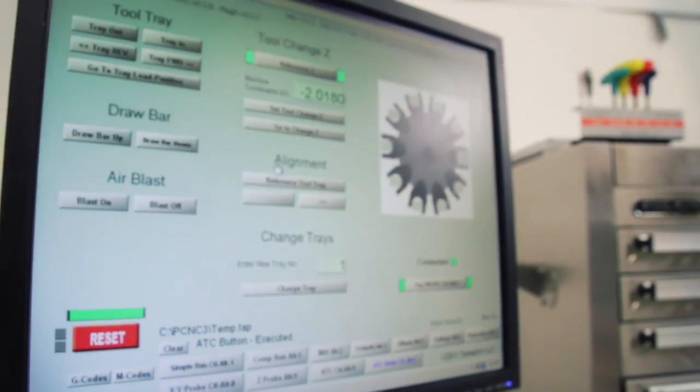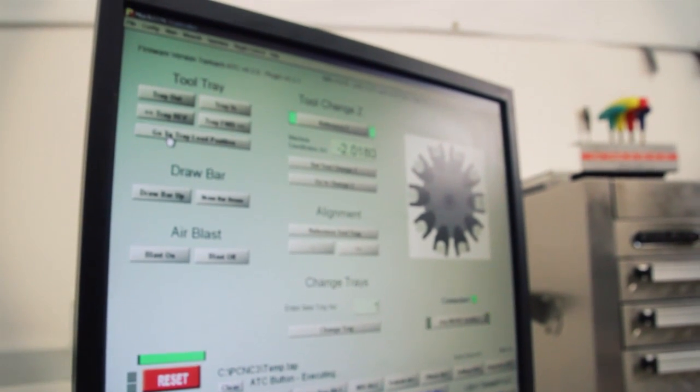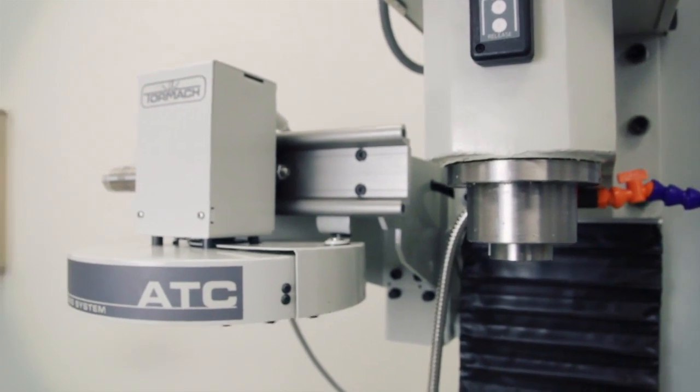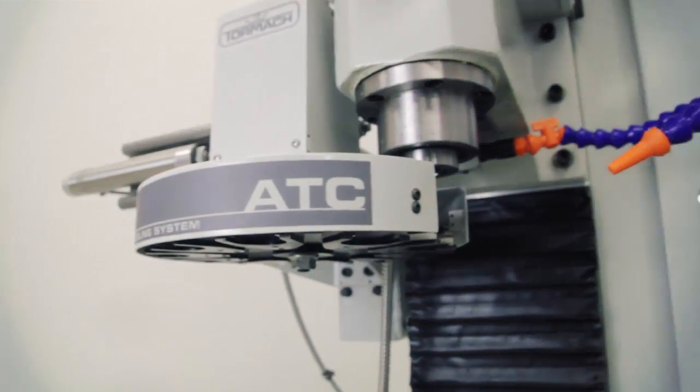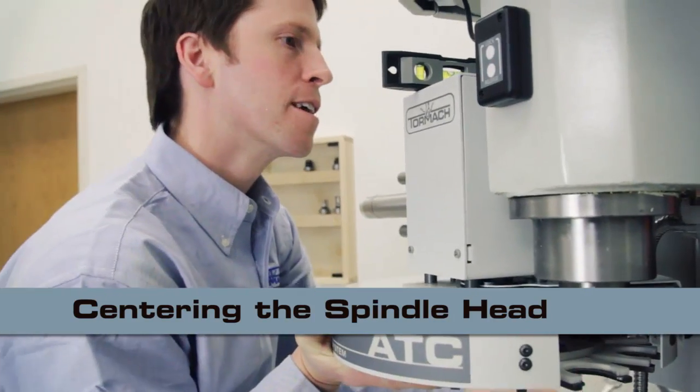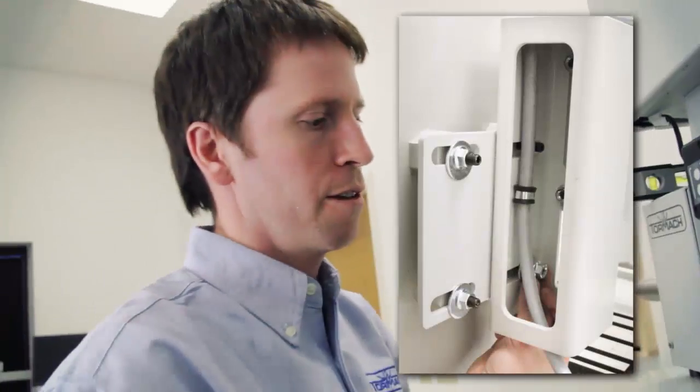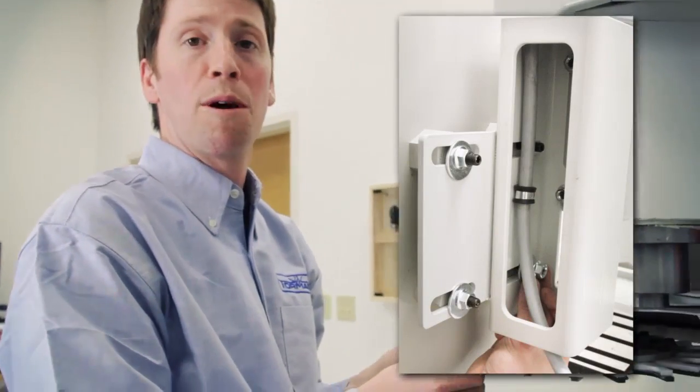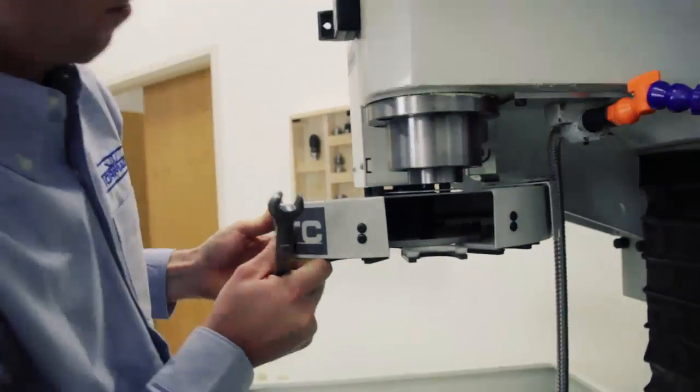And I'm going to click go to tray load position. At this point I've loosened the flange bolts that hold the square bracket to the mill column and I'm going to get the spindle nose roughly centered and the carousel open.